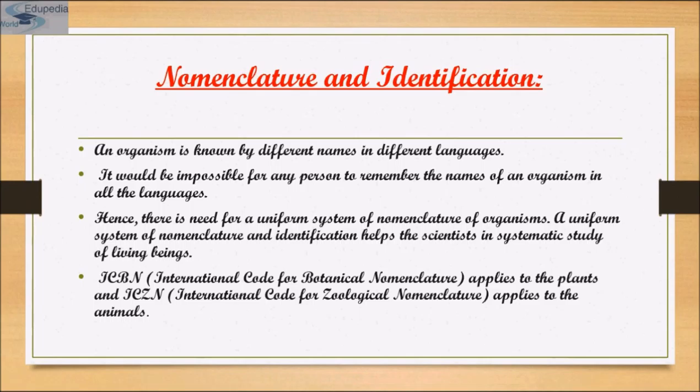A description of any organism should enable people to arrive at the same name. Scientific names also ensure that a name has not been used for any other known organism. Biologists follow universally accepted principles to provide scientific names. Each name has two components: the generic name and the specific epithet.